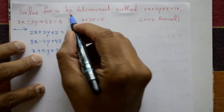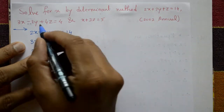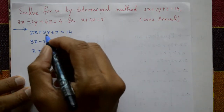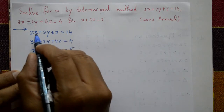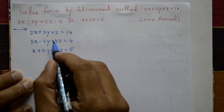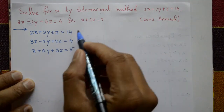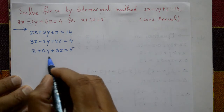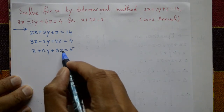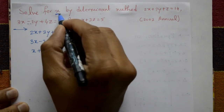Solve for x by the determinant method. The equations are given: first equation, 2x plus 3y plus z is equal to 14; second equation, 3x minus 2y plus 4z is equal to 4; third equation, the y variable is not mentioned, so write it as x plus 0y plus 3z is equal to 5. Now using the determinant method, find the x values.